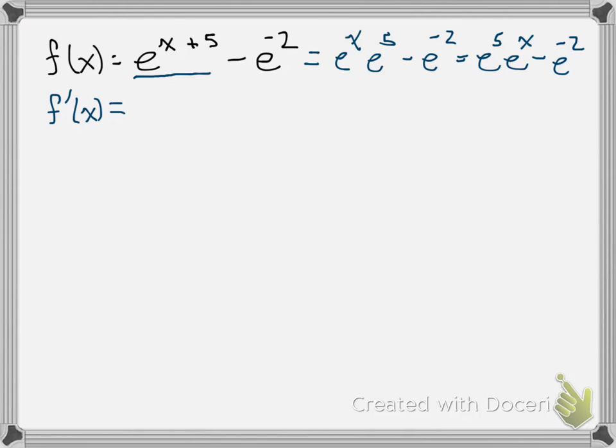Now from what we know at this point of derivative rules, this e to the fifth here is just a constant. So we have a constant times a function, which means we're just going to take the derivative of the function and then have the constant in our derivative.